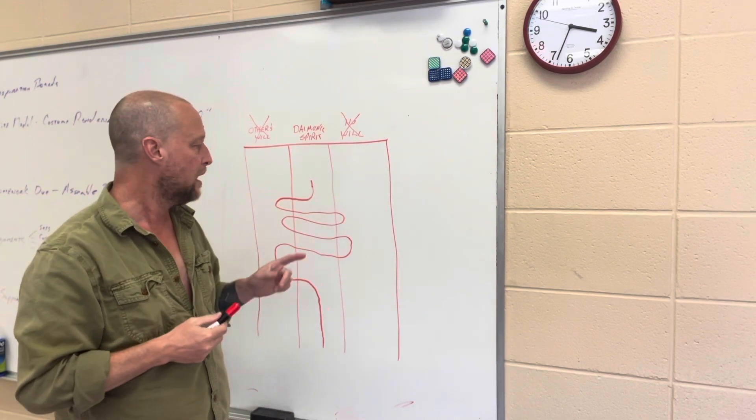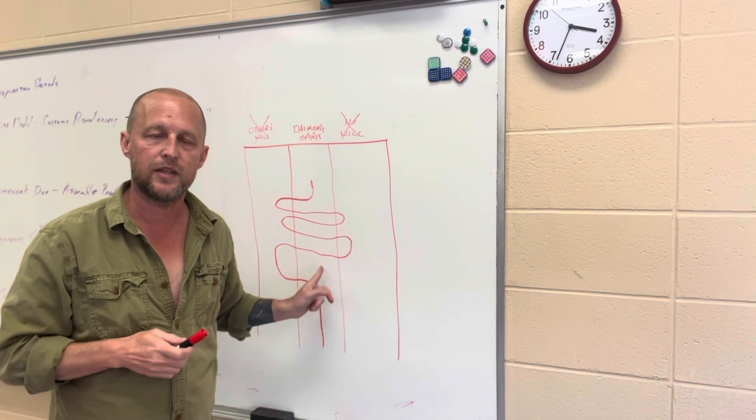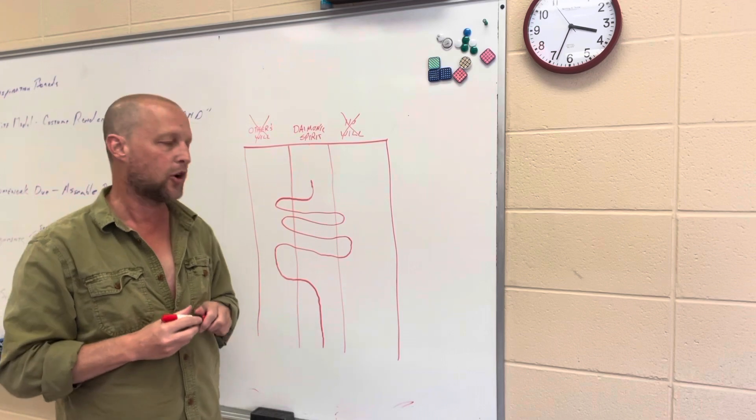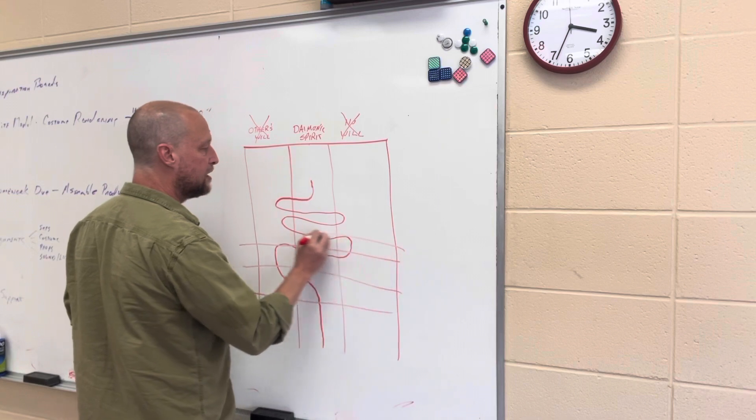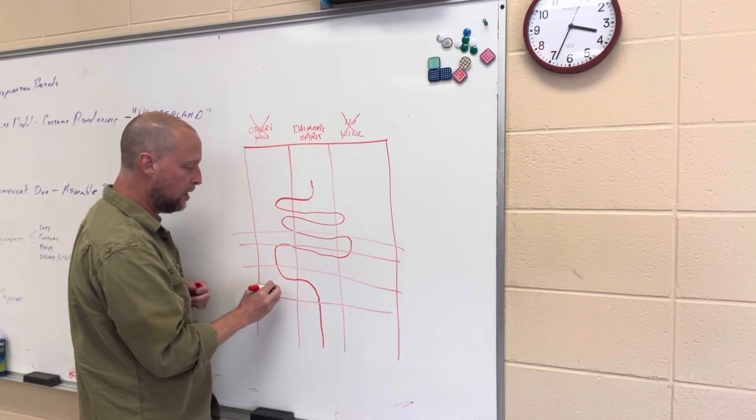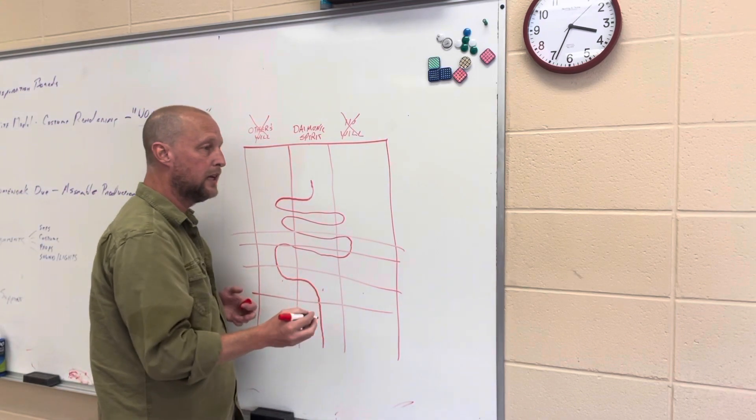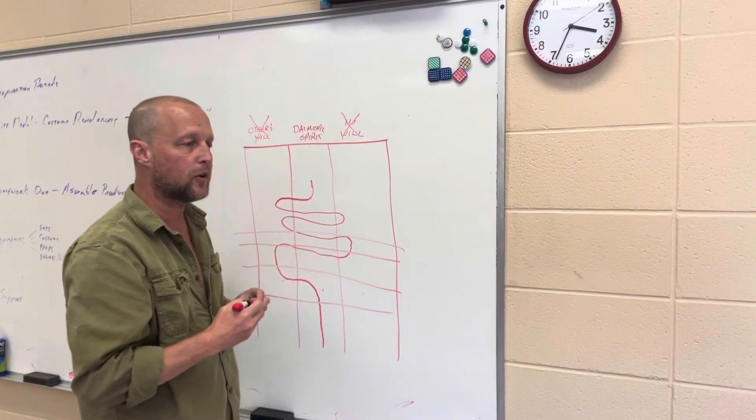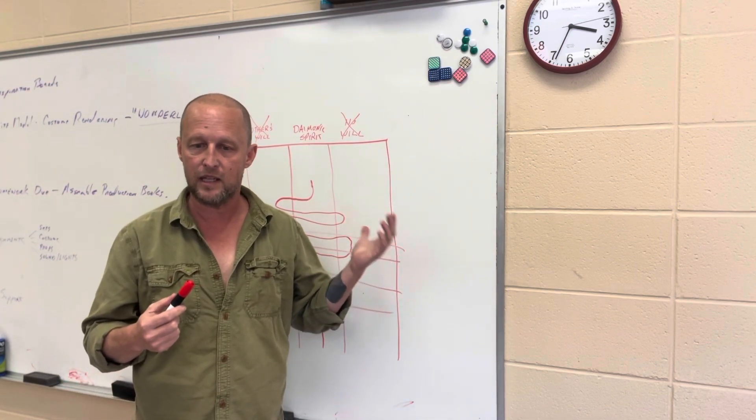And so I'll upload a blank version of this to the Patreon, and you can kind of chart your own life. And one of the ways you can do it is you can kind of divide your life into years or decades and say, in this year, was I others' will, the daemonic spirit, or no will? And then you can kind of chart your own progress through your life by these columns.